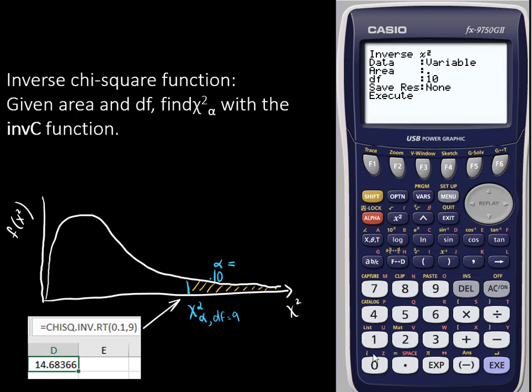Now we'll enter area here as 0.1, degrees of freedom as 9, and solve, and we get 14.68.